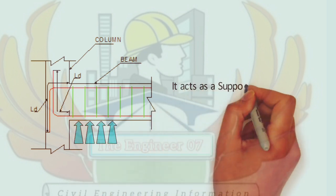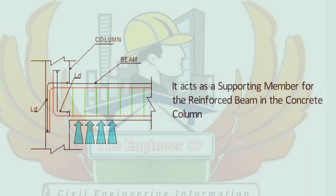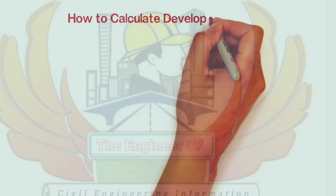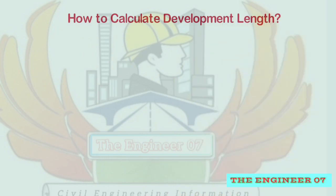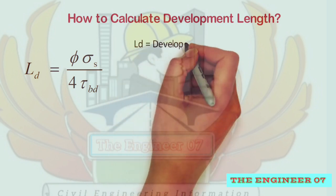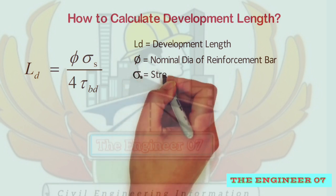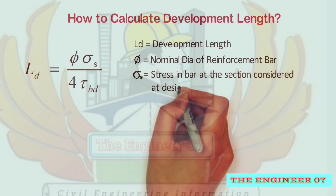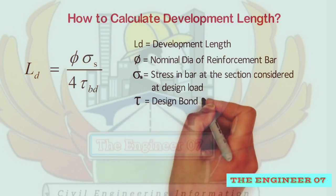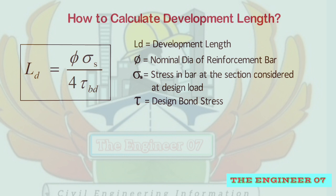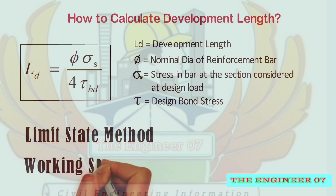Hence, development length acts as a supporting member for the reinforced beam in the concrete column. Now let us understand how to calculate development length. The formula is: Ld = φ × σs / (4 × τbd), where Ld is the development length, φ is the nominal diameter of the reinforcement bar, σs is the stress in the bar at the section considered at design load, and τbd is the design bond stress. This formula is used to calculate the required development length in mm for any given diameter of bar, and is used for both limit state method and working stress method.